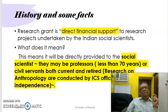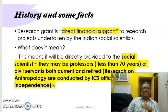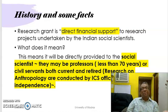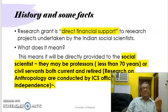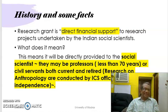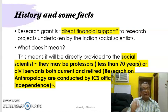Some facts to share: the research grant is direct financial support to research projects undertaken by Indian social scientists. This means it is directly provided to the social scientists — they may be professors who are less than 70 years of age, or civil servants, both current and retired. Much of the research in Indian anthropology was conducted by ICS officers before independence. Therefore, the focus is mostly on individual competence to address social issues and provide research output.